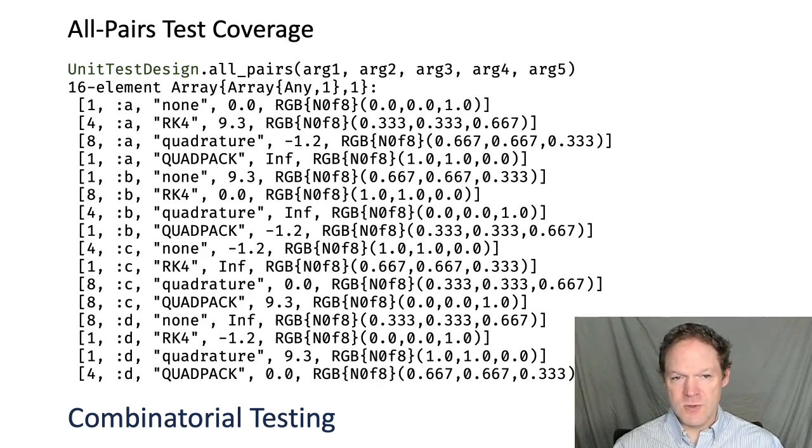then those arguments are guaranteed to be called together in at least one of these test cases. This is called all-pairs testing, and it's a kind of combinatorial testing.